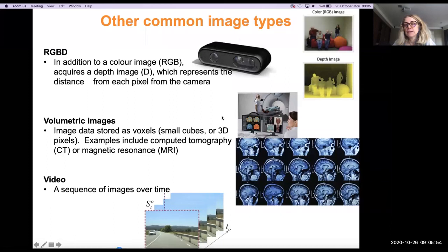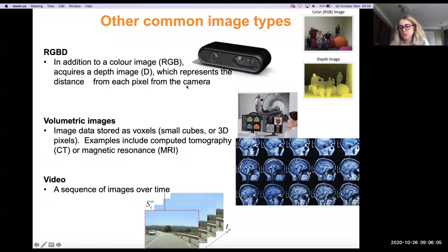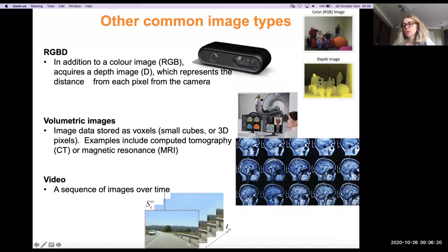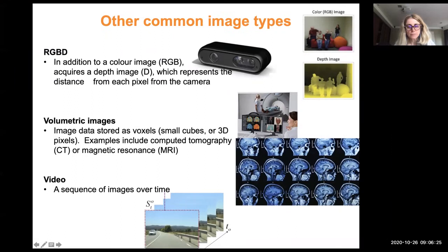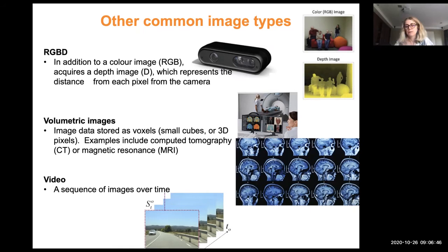There are other types of images. RGBD images, like those from a Kinect, add a depth channel acquired by a laser scanner that bounces light rays from the environment, giving extra 3D information. Volumetric images — like MRI or CT scans — are 3D volumes you view as slices. Video sequences are 2D images stacked over time. Now let's start with point processing.